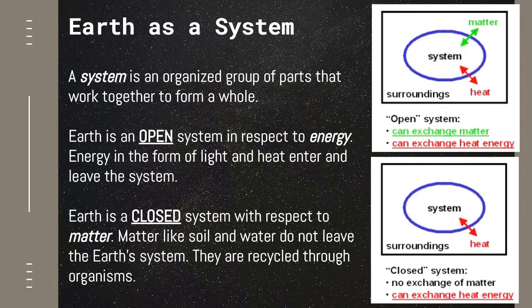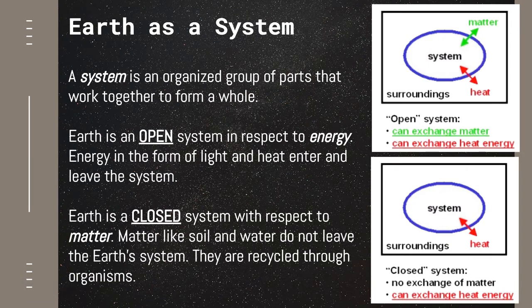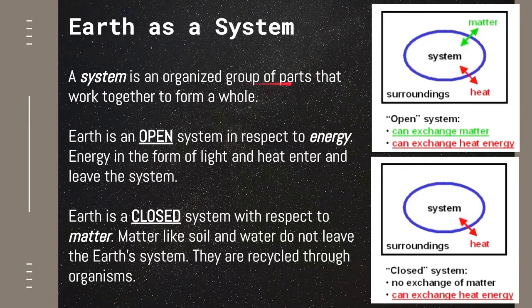Earth is considered a system, and we define a system as an organized group of parts that work together to form a whole. An example would be the organ systems of the human body. So if we have a digestive system, that's a group of organs that work together with the same function. The system is the digestive system, but it is made up of parts such as the mouth, the esophagus, the stomach, small and large intestine, rectum, and accessory organs such as the pancreas, liver, and gallbladder. So if we define Earth as a system, it means that it is a whole made up of parts that work together.